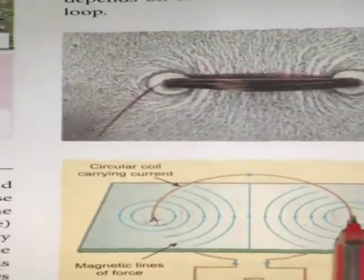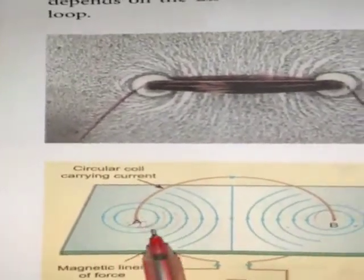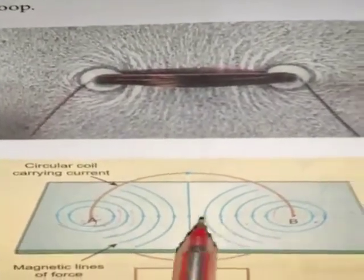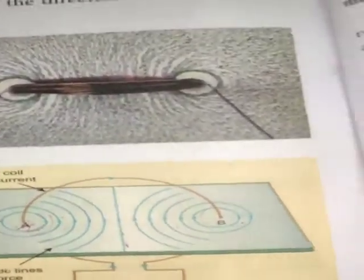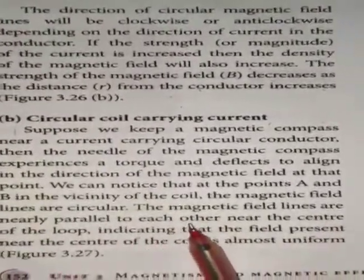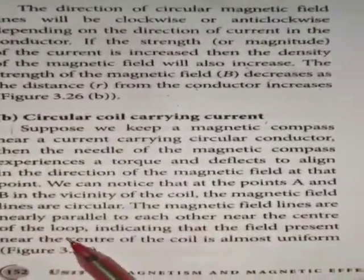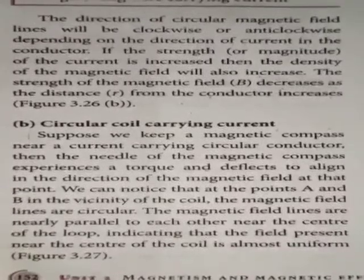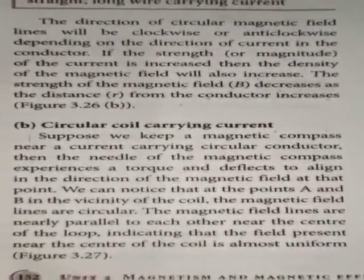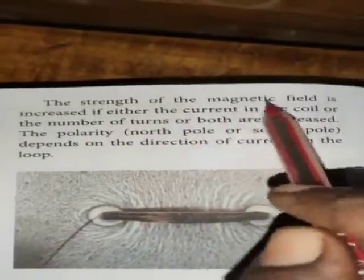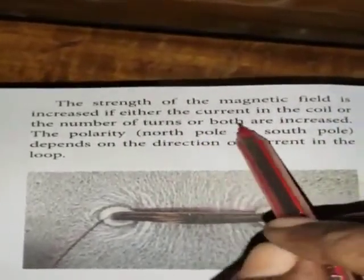At the ends A and B, there are circular concentric magnetic field lines. At the center of the circular current carrying coil, we get almost straight lines — the magnetic field lines are nearly parallel to each other near the center of the loop, indicating that the field present near the center of the coil is almost uniform. The strength of the magnetic field is increased if either the current in the coil or the number of turns are increased.